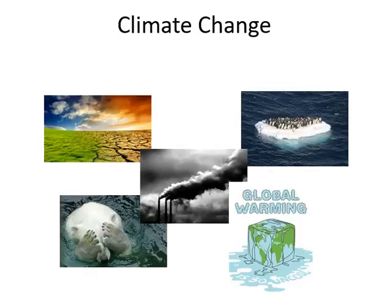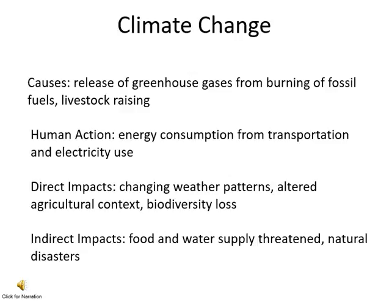First we're going to discuss climate change, or as many people refer to it, global warming, although I tend to think of global warming as only one part of a broader range of changes that are taking place. What causes climate change is the release of greenhouse gases, typically from the burning of fossil fuels, but also from other behaviors such as livestock raising. Human action involved here is energy consumption, a lot of that from transportation, some of it from electricity use. This has direct impacts on weather patterns and that can affect things like agriculture and levels of biodiversity, which is the number of plant and animal species in a particular place.